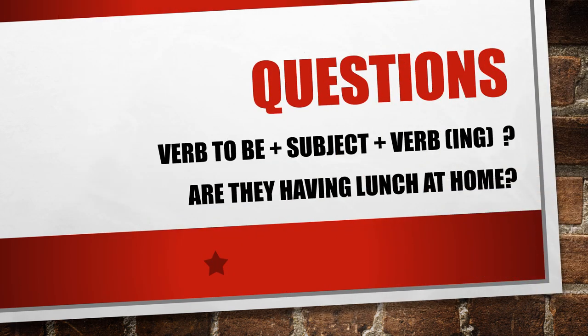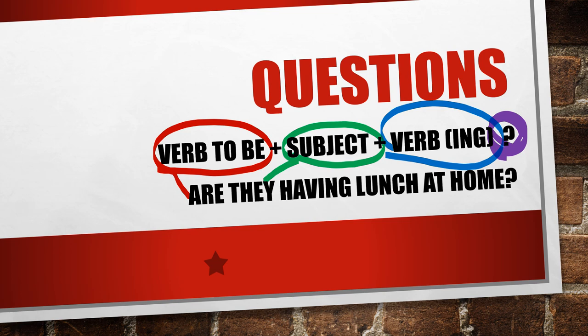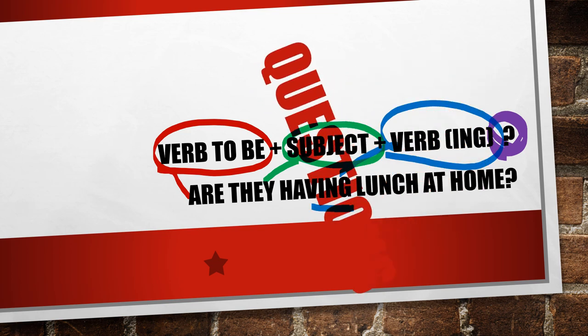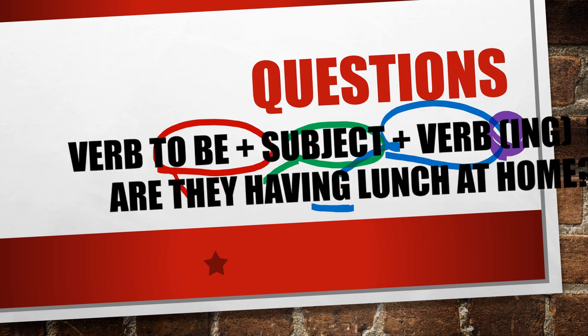Questions. Now verb to be is going to be before the subject. So the structure is verb to be plus subject plus verb ending in -ing. It's very important — don't forget the question mark at the end of the sentence. We can see here: verb to be — are; subject — they; and verb ending in -ing — having. So the question is: are they having lunch at home?